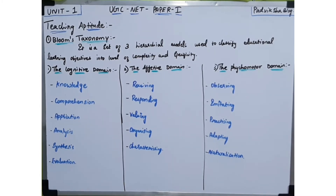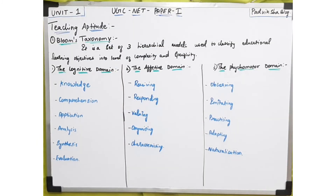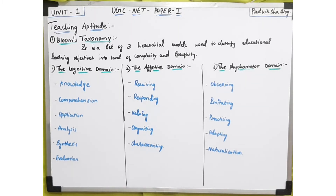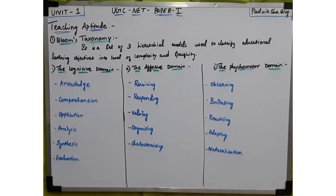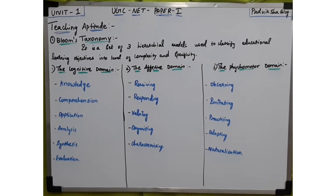Now let's move on to the affective domain. The affective domain involves our feelings, emotions, and attitudes. While the cognitive domain is about skills and knowledge, the affective domain deals with emotional ability, feelings, and attitudes. The affective domain has five categories.